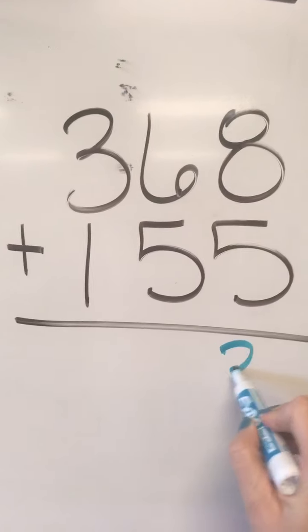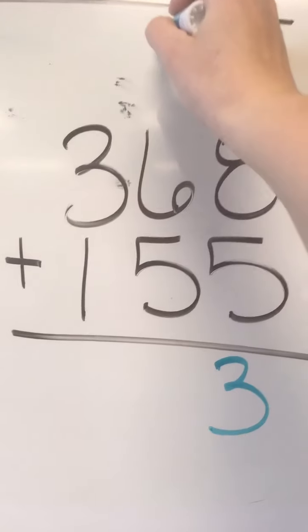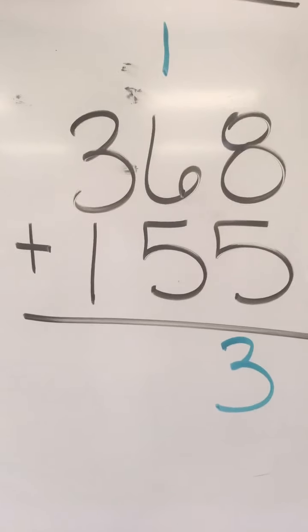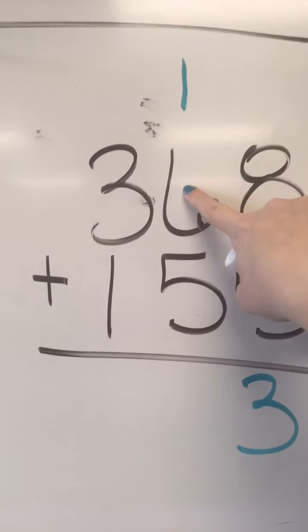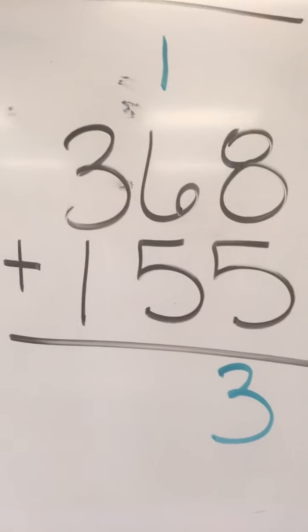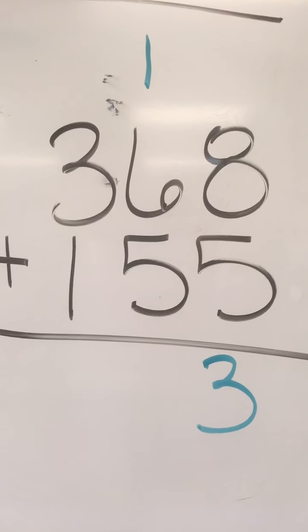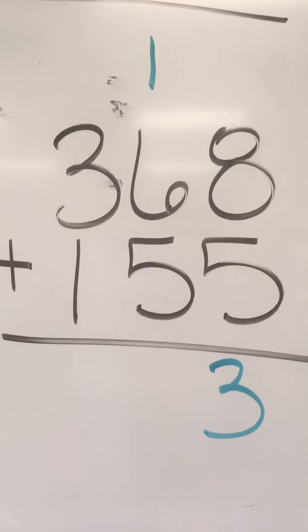We're going to put our three ones and regroup our ten, and then we have one plus six plus five tens, and how many tens is that? That's twelve tens.